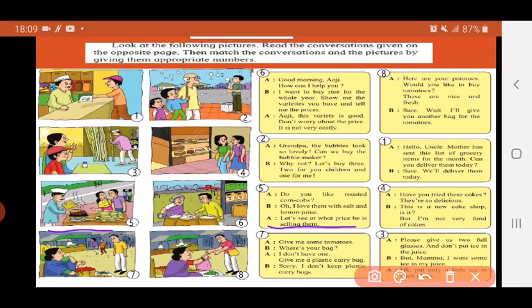So the lady replies to the man, Oh, I love them with salt and lemon juice. So the man tells her, Let's see at what price he is selling them. So here both are then coming to the stall to buy some roasted corn cobs, so this you can label as picture number five.